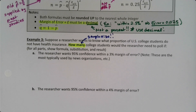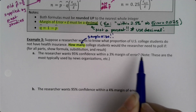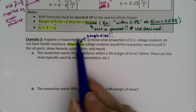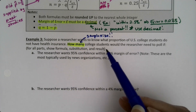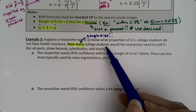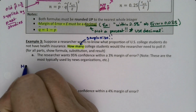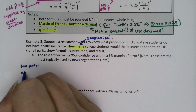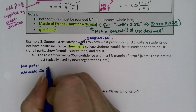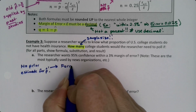The researcher wants to be 95% confident within a three percent margin of error. There's no old study mentioned — no prior information about a past percentage. That means we have no prior estimate for p-hat, so this is the no-prior-estimate case.